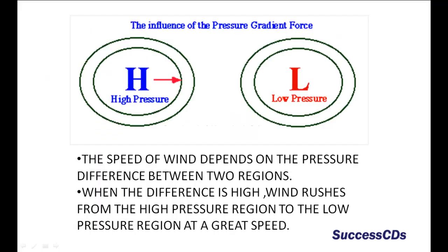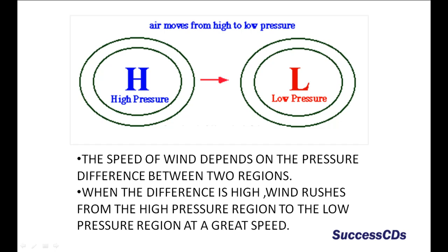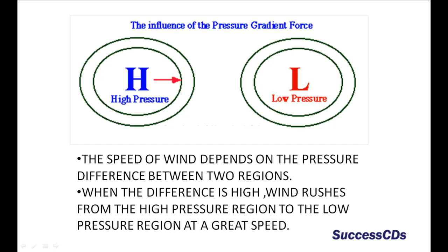The speed of wind depends on the pressure difference between the two regions. When the difference is high, wind rushes from the high pressure region to the low pressure region at a great speed.